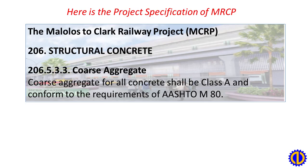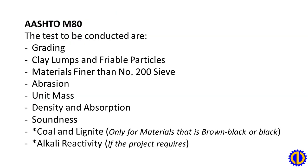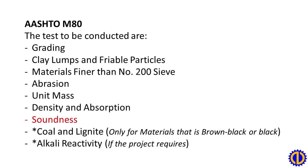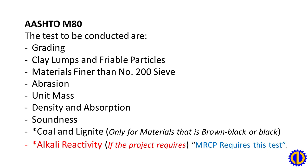Here is the project specification of MRCP — the Malolos to Clark Railway Project — for structural concrete coarse aggregate. Coarse aggregate for all concrete shall be Class A and conform to the requirements of AASHTO M80. The tests to be conducted are: gradation, clay lumps and friable particles, materials finer than No. 200 sieve, abrasion, unit mass density and absorption, soundness, coal and lignite (only for materials that are brown, black, or black in color), and alkali reactivity, if the project requires it.